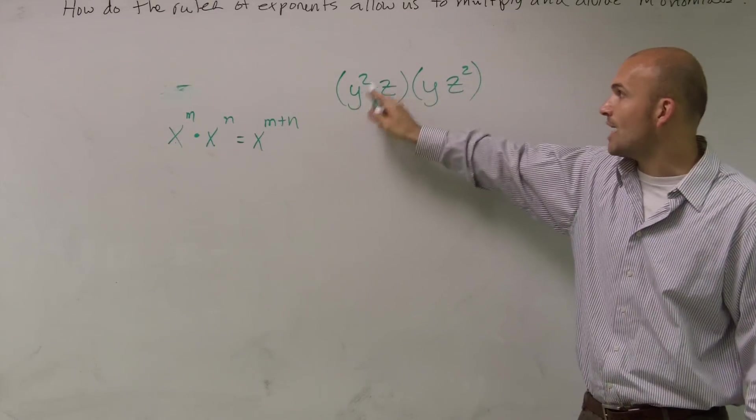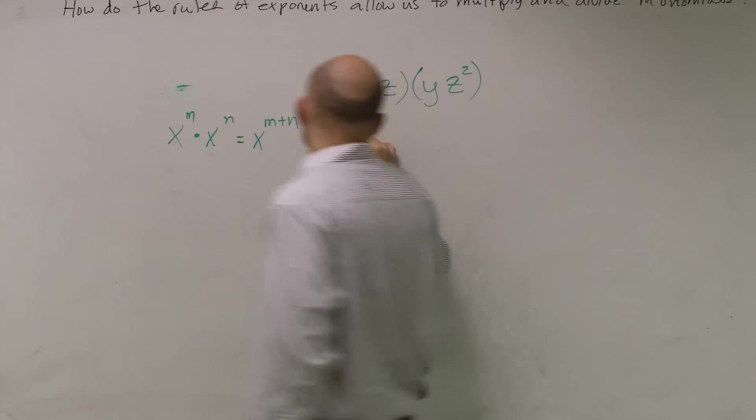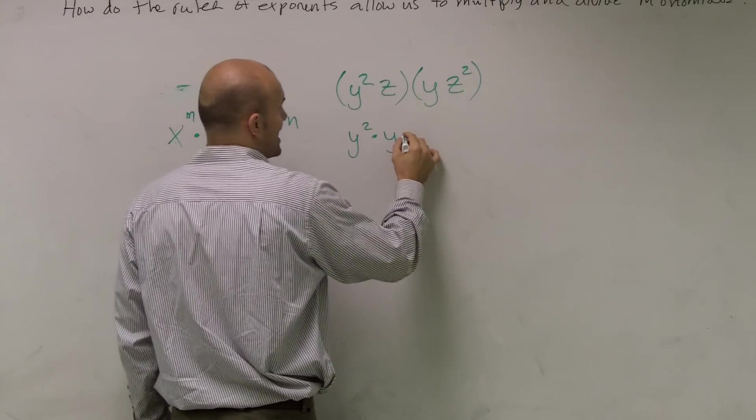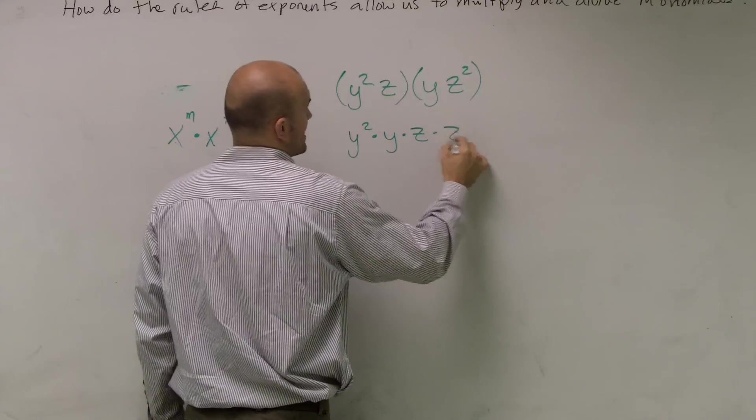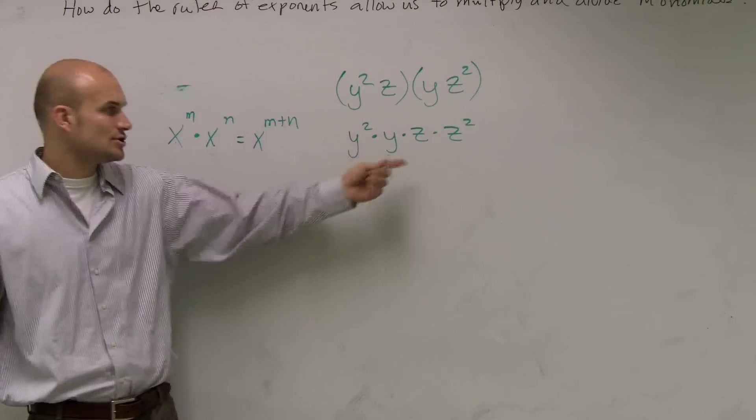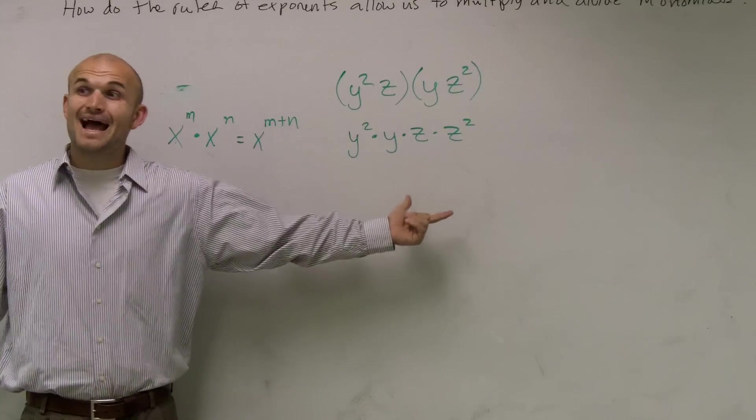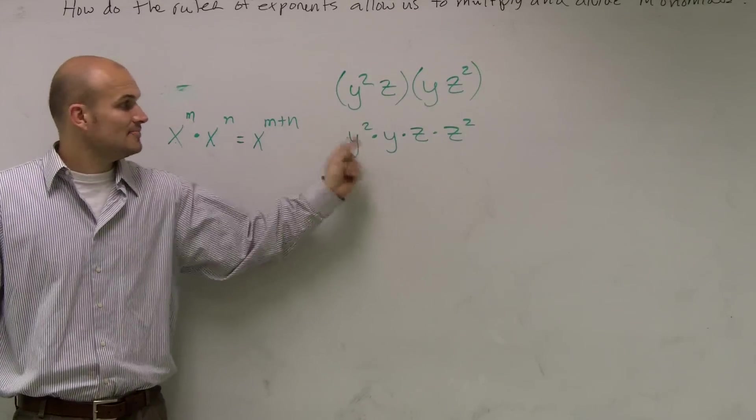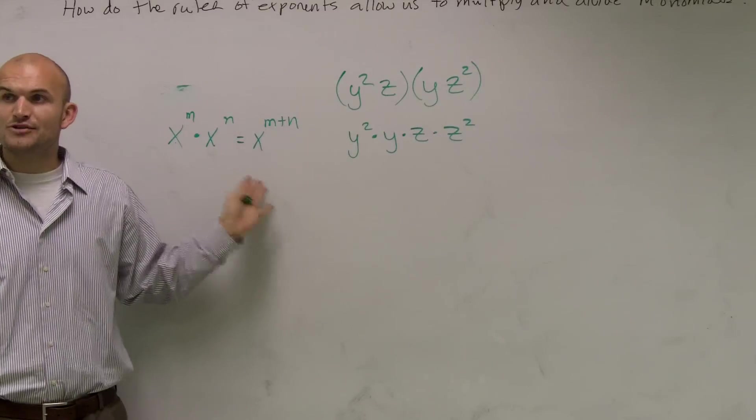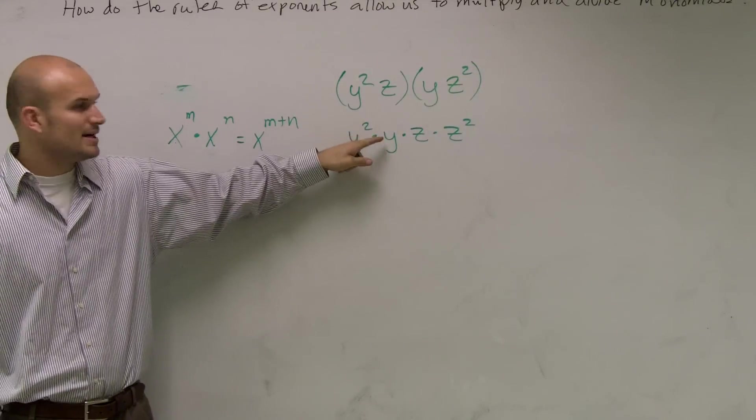I can rewrite this as y squared times y times z times z squared. Okay? You can rewrite this so the y's are next to each other and the z's are next to each other. Now, what I can do is apply my multiplication property of exponents. So when I'm multiplying these, the next thing is, well,